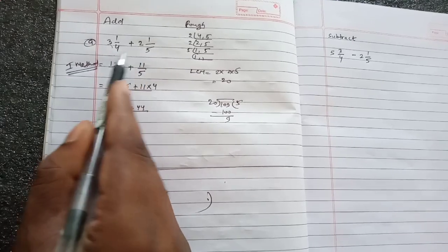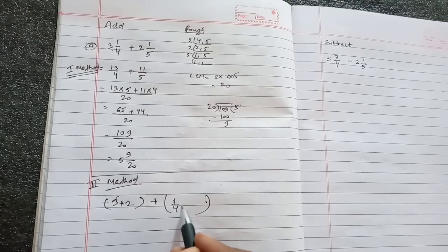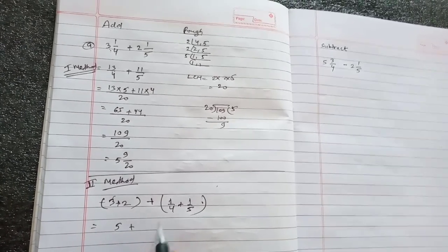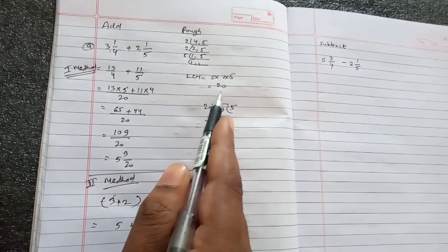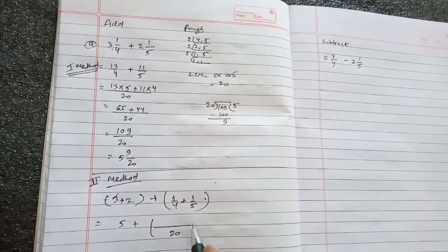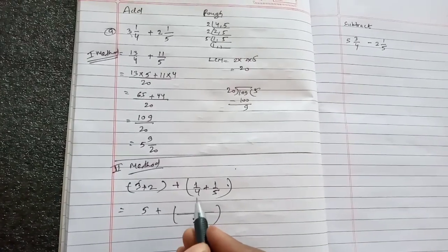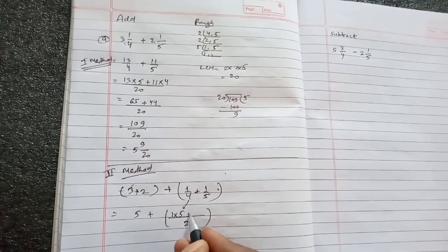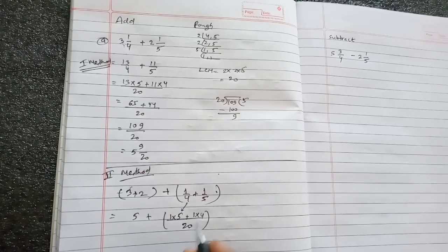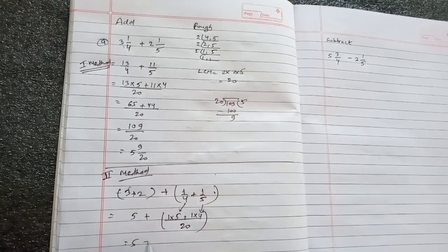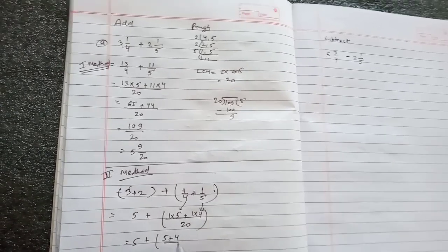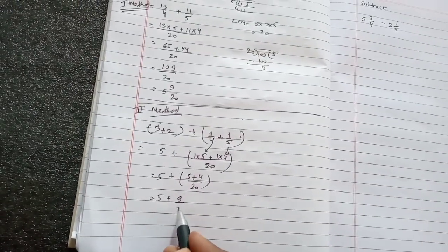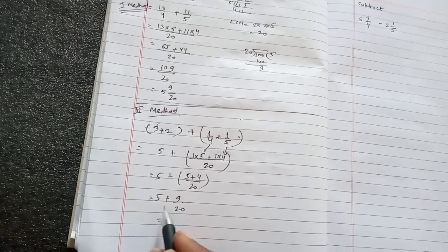3 plus 2, and 1/4 plus 1/5 in another bracket. Now 3 plus 2 is 5. Now take the LCM of 4 and 5, which is 20. 4 into 5 is 20, so 1 times 5 is 5. Again, 5 into 4 is 20, so 1 times 4 is 4. So 5 plus 4 is 9/20. So we get 5 plus 9/20.